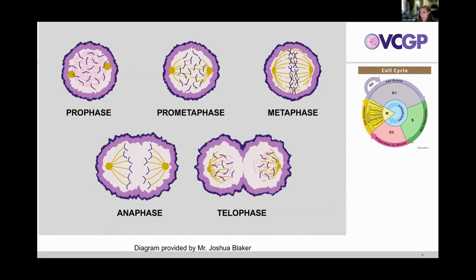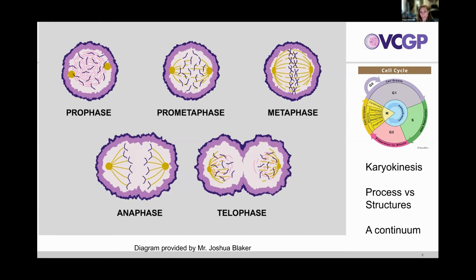Mitosis is nuclear division or karyokinesis, occurring during the M phase of the cell cycle. When we look at a mitotic figure, mitosis is the process of karyokinesis, whereas mitotic figures are the structures we can view with microscopy. It's important to remember that mitosis is a continuum, so cells in tumor specimens may be within one of five phases or between phases. This diagram approximates the five phases of mitosis recognizable in histologic specimens.